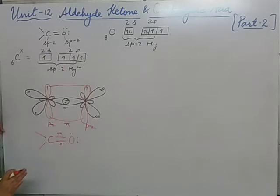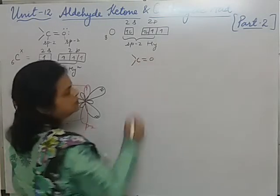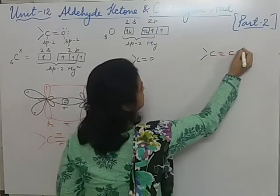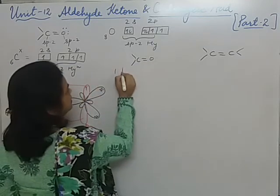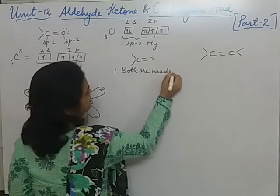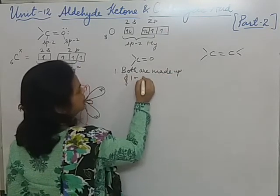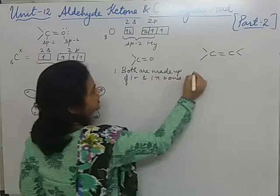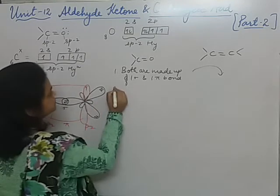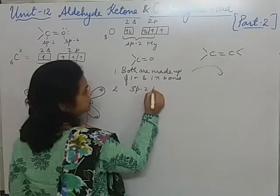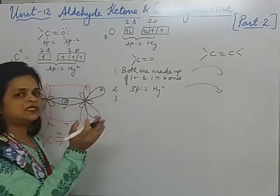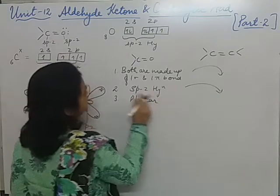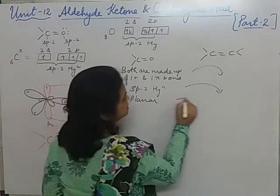So this is all about the carbonyl bond. Now, comparing the carbonyl bond (C=O double bond) and the carbon-carbon double bond (C=C). Similarities: both are made up of 1 sigma and 1 pi bond. Both have SP2 hybridization. Both have a planar structure because the 3 SP2 hybrid orbitals are arranged in a plane. Both undergo addition reactions.